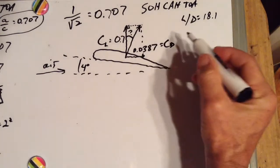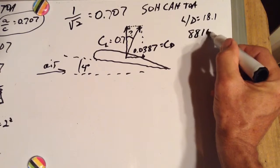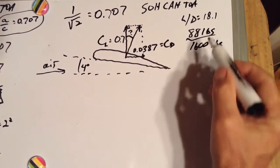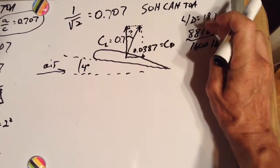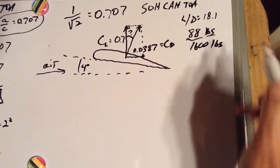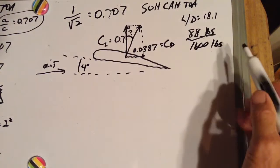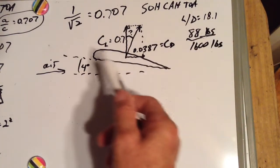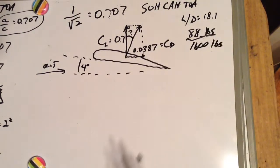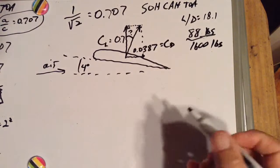It's 0.0387 divided by 0.7, or it's 88 pounds divided by 1600 pounds. 88 pounds divided by 1600 pounds. Our drag for our Cessna 150, if this were the case, these coefficient of lift and drag, our drag would be 88 pounds with our lift being 1600 pounds. Our lift to drag ratio would be 18.1.